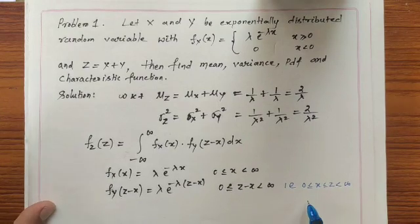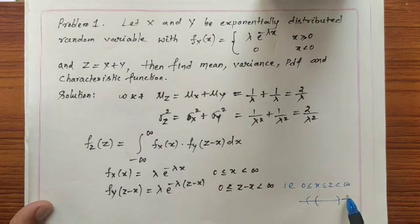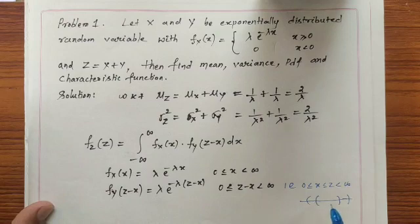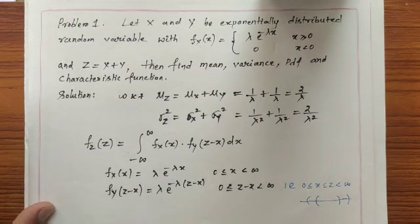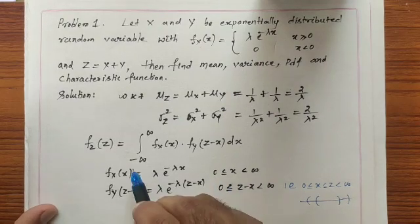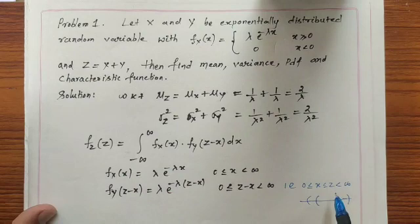To identify the overlapping region, you can write one interval and another interval and identify where they coincide. One way is to take the maximum of the lower limits and the minimum of the upper limits. Looking at the two intervals, the minimum lower limit is 0 in both, so the lower limit is 0. The minimum of infinity and z gives the upper limit as z.